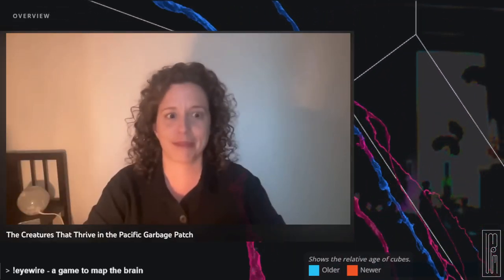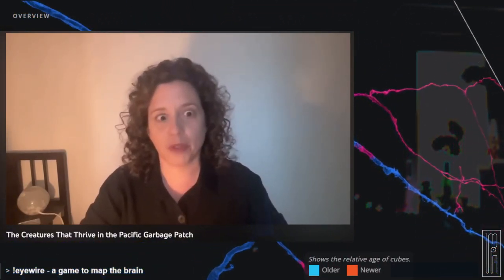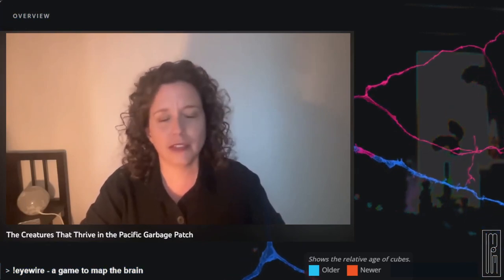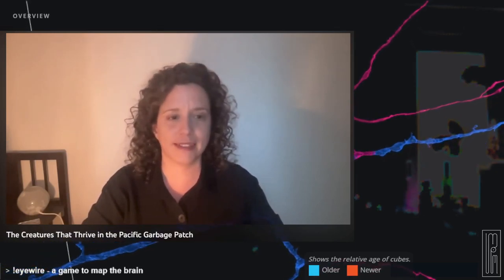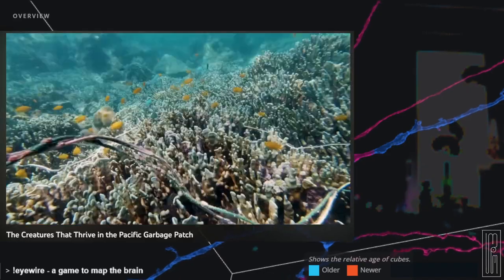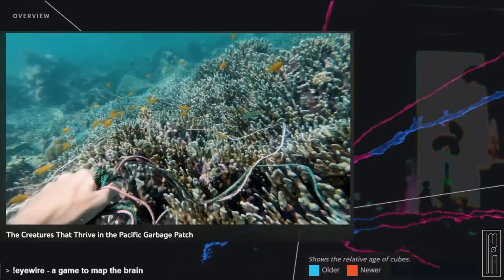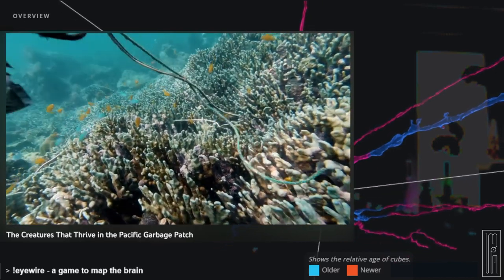It's not this floating patch of trash that you can see from space. Nothing like that at all. In fact, if you were on a boat looking out at the garbage patch, it looks like beautiful pristine ocean. It's only when you look more closely that you realize something's a little bit unusual about this particular spot. So it's not a singular dense barge of trash, but what is out there can still cause great harm to ocean life.